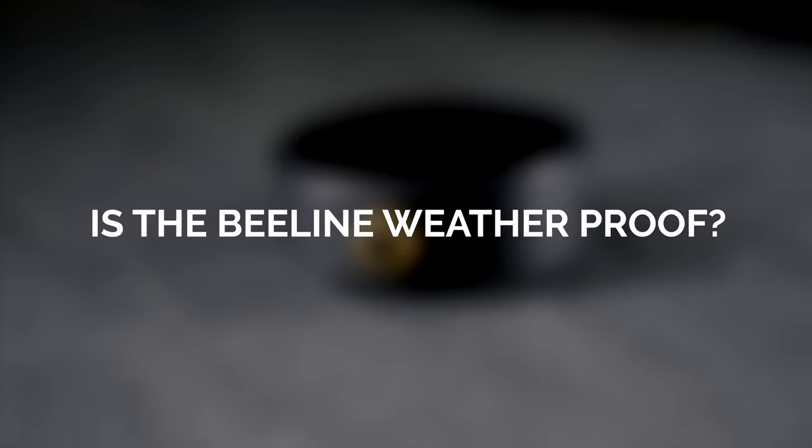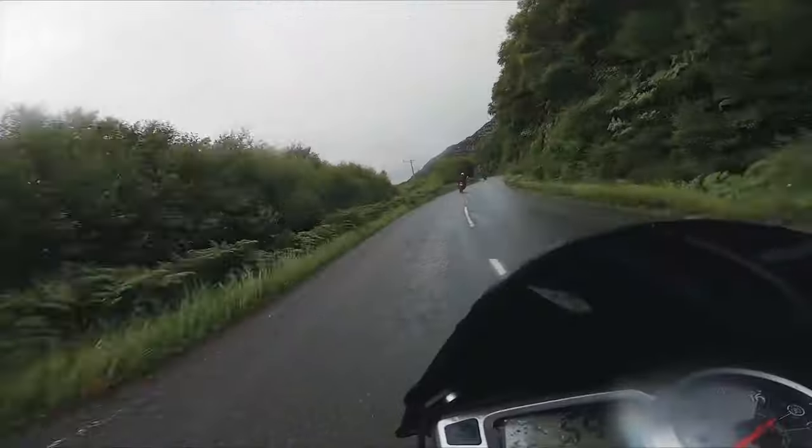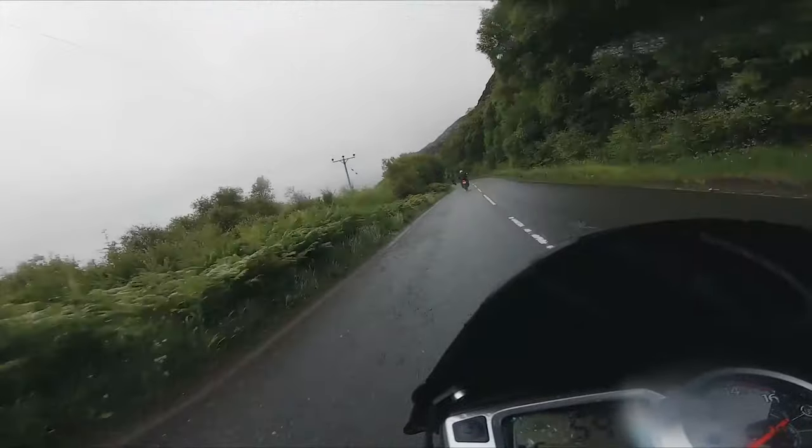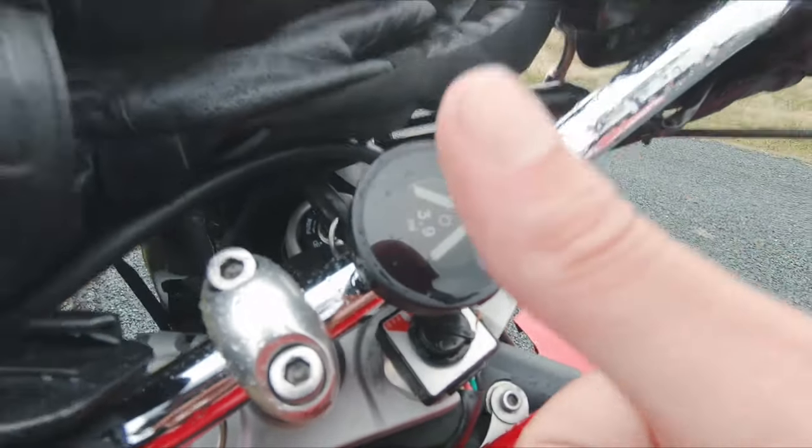Is the Beeline weatherproof? Yes, the Beeline is IP67 waterproof. This means it's protected from harmful dust and can be submerged in up to one meter of water for up to 30 minutes. I've tested this out in some pretty extreme conditions both on and off road and not had any issues.